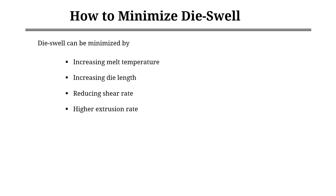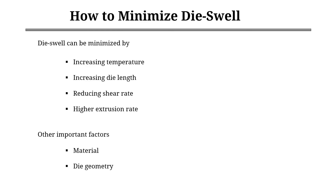Die swell can be minimized by increasing the melt temperature, increasing die length, reducing shear rate, and increasing extrusion speed. Other than these factors, die swell also depends on material type and die asymmetry. So there are many factors that need to be taken care of to minimize die swell.